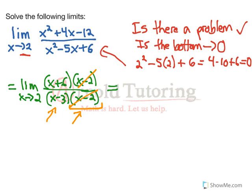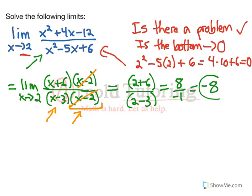So sub in 2 for x, we get 2 plus 6 over 2 minus 3. Notice I'm no longer writing the limit, because I've subbed in 2. And it equals 8 over negative 1, which is just negative 8. So the limit as x approaches 2 of this function is negative 8.